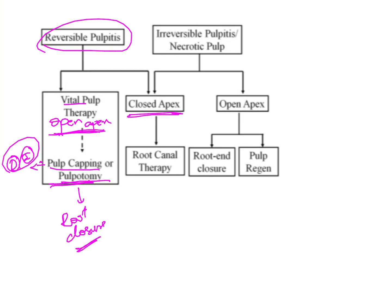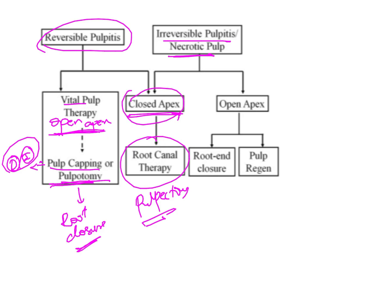If the apex is already closed, we can proceed with normal root canal therapy or pulpectomy. In irreversible pulpitis with a necrotic pulp, if the apex is closed we go ahead with root canal therapy or pulpectomy. It is only when the apex is open that we need to consider alternative treatment methods — because we want to achieve root end closure — such as apexification, which causes the formation of a root barrier at the end of the roots.